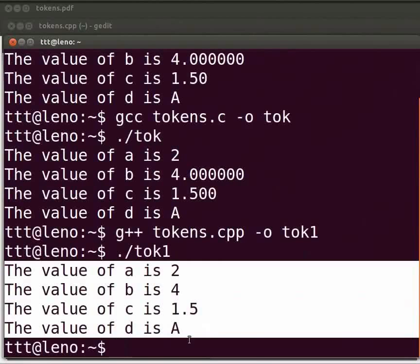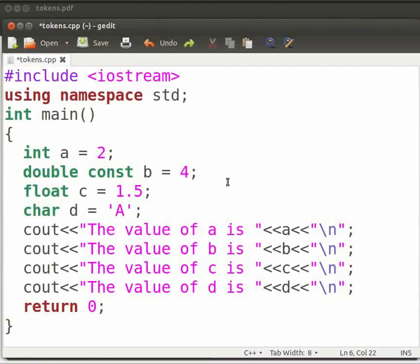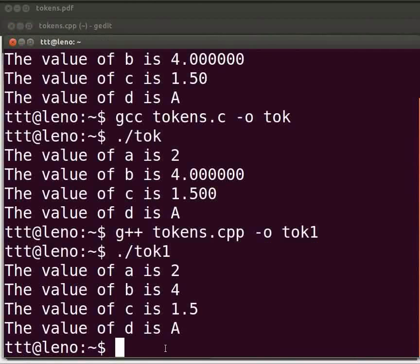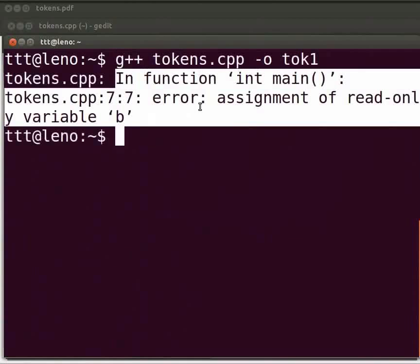Now, let us move on to some common errors which we can come across. Come back to our program. Suppose here, I will reassign a new value to b as 8. Now, click on save. Let us see what happens. Come back to our terminal. Let me clear the prompt. Now, compile as before. We've seen error at line number 7 in our tokens.cpp file. Assignment of read-only variable b.